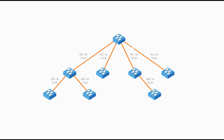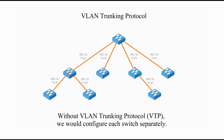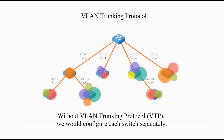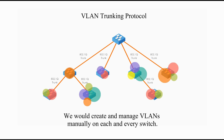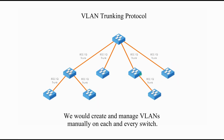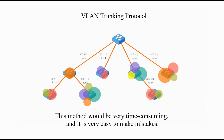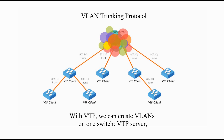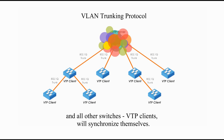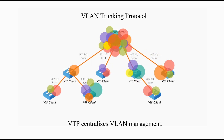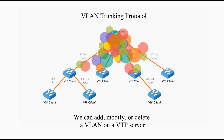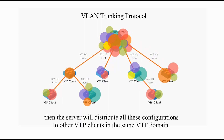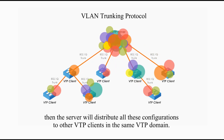Let's start with this example. Imagine we have a bunch of switches on a network. Without VLAN Trunking Protocol, we would configure each switch separately — creating and managing VLANs manually on each and every switch. This method would be very time-consuming and it is very easy to make mistakes. With VLAN Trunking Protocol, we can create VLANs on one switch, the VTP server, and all other switches — VTP clients — will synchronize themselves. VLAN Trunking Protocol centralizes VLAN management: we can add, modify, or delete a VLAN on a VTP server, and the server will distribute all these configurations to other VTP clients in the same VTP domain.